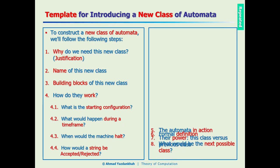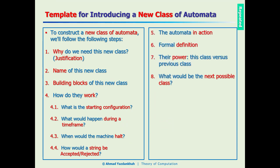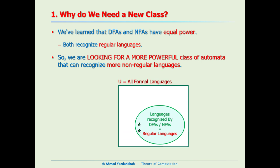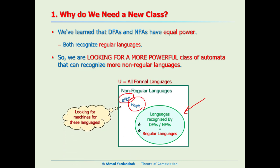We already have a roadmap for how to introduce a new class of automata — we are going to follow eight steps. The first step: why do we need a new class? DFAs and NFAs have equal power and both can only recognize regular languages, which is a small portion of all languages as the sketch shows. We are looking for a more powerful class to handle other kinds of languages.